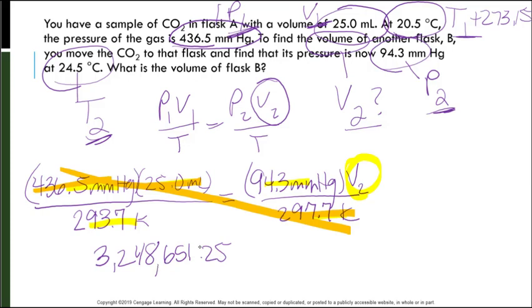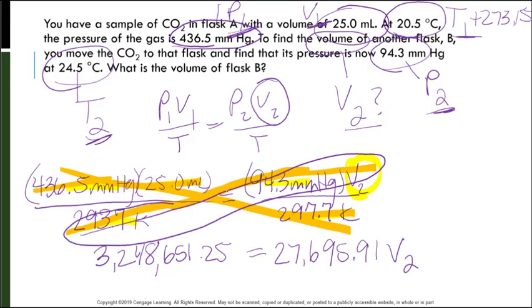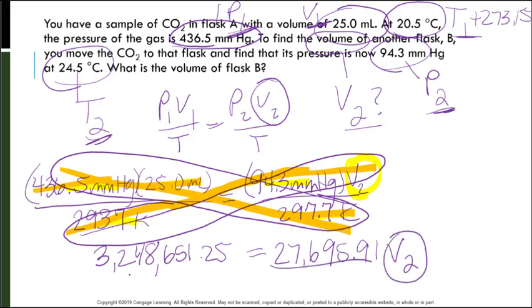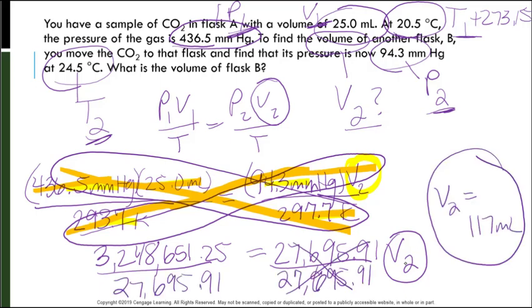Okay, now let's cross multiply the other direction. I'm going to do 293.7 times 94.3 times V2 to give me 27,695.91. But remember that V2 is still there. So I did these three times each other and those three times each other. I'm still cross multiplying. And now to get V2 by itself, I need to divide both sides by that 27,000 number. And that should give me a V2 with three significant figures of 117 milliliters.